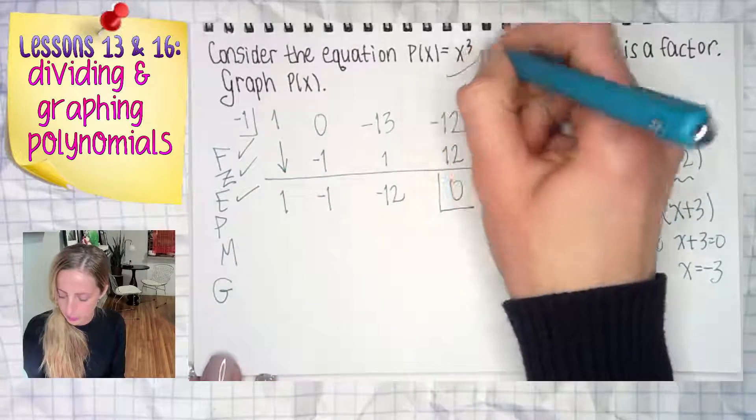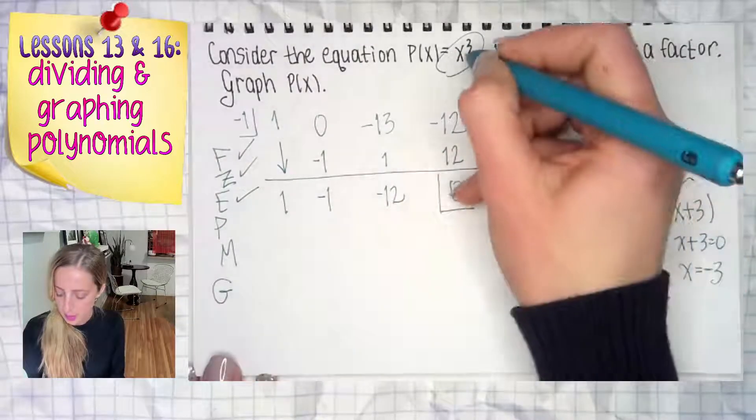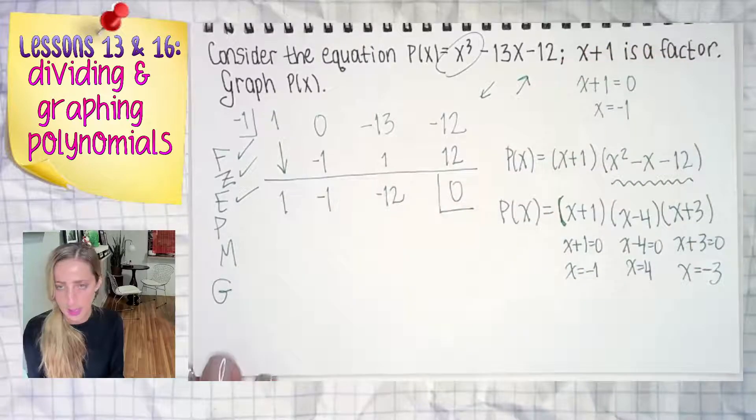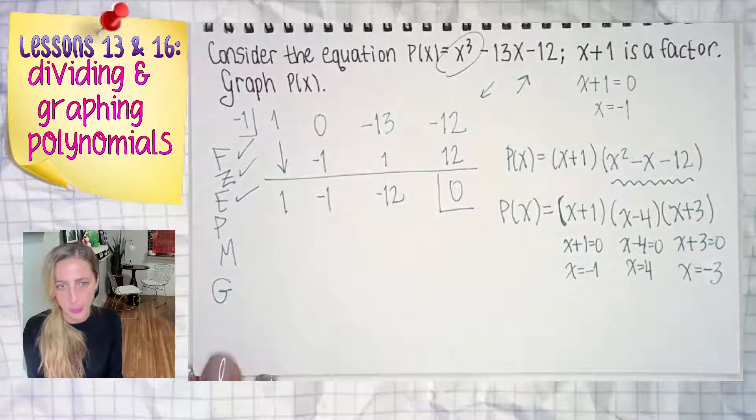End behavior. Well, expanded form. Positive to an odd. End behavior is down and up. Down on the left, up on the right. All right.